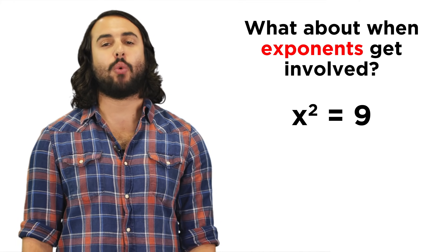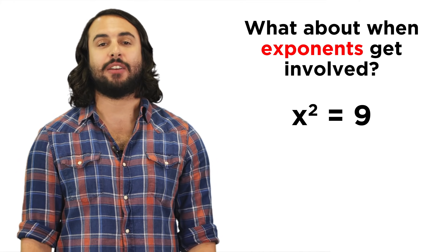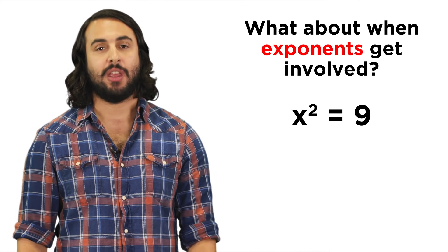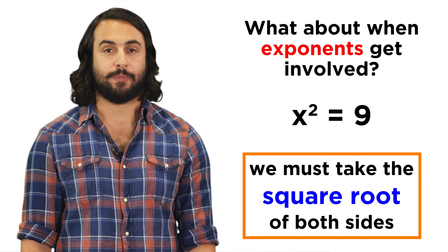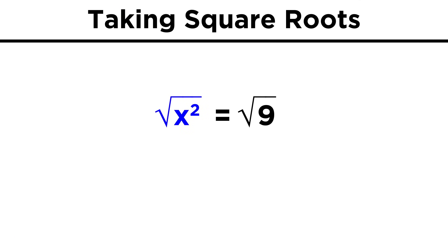What if we have x squared equals nine? What is the inverse of squaring something? That would be taking the square root. When we take the square root of x squared, we get x, because squaring x is what would give us x squared. On the other side, the square root of nine is equal to three, because three squared, or three times three, gives us nine.